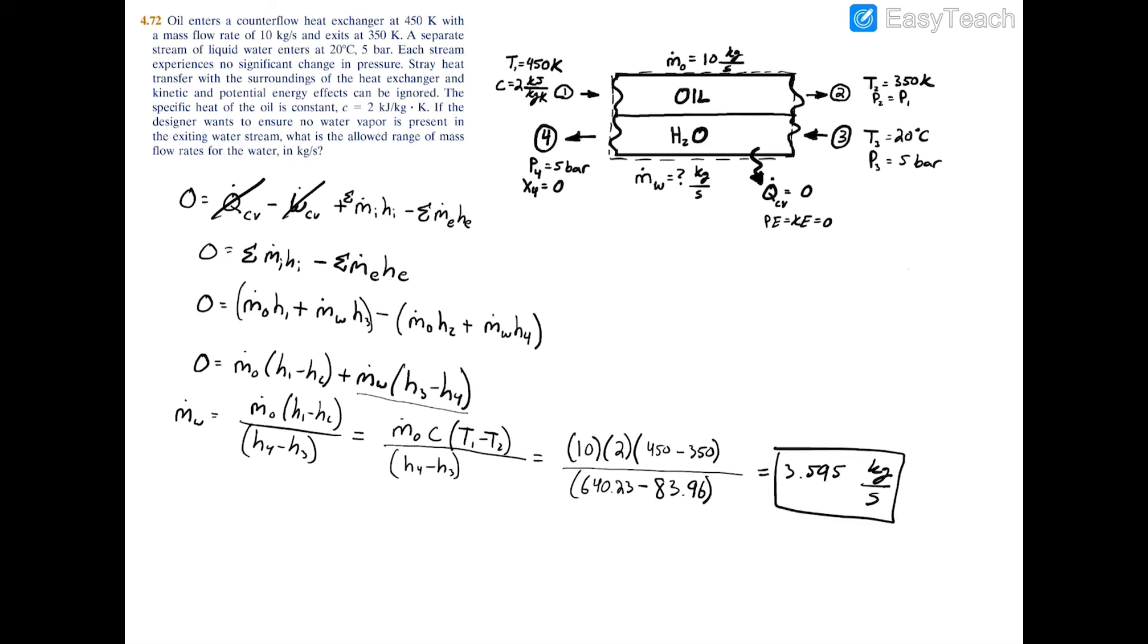So essentially this gives us our lower limit and tells us that m dot w, the flow rate of the water, must be at least a minimum of 3.595 kilograms per second. So your range is 3.595 and greater.